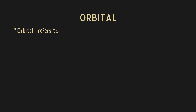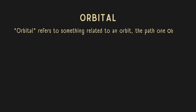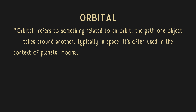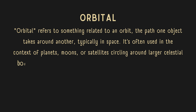Orbital refers to something related to an orbit, the path one object takes around another, typically in space. It's often used in the context of planets, moons, or satellites circling around larger celestial bodies.